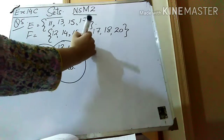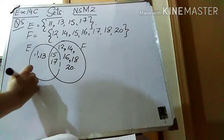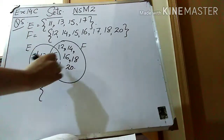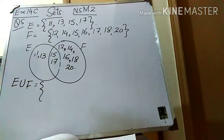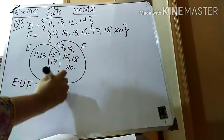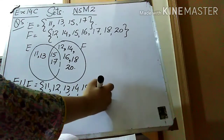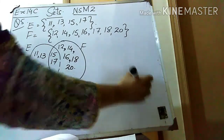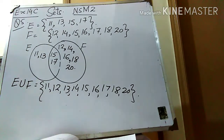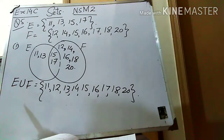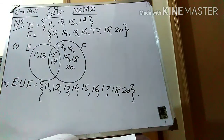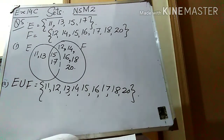In part B, from the Venn diagram, list all the elements in E union F in set notation. In union we write all the elements together in sequence: E union F = {11, 12, 13, 14, 15, 16, 17, 18, 20}. This is set E and set F shown through the Venn diagram, and this is E union F in set notation. I hope that question number 5 is clear to you. Take very good care of yourself. Thank you very much and Allah Hafiz.